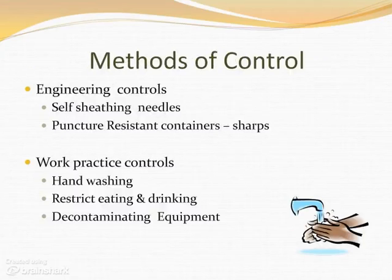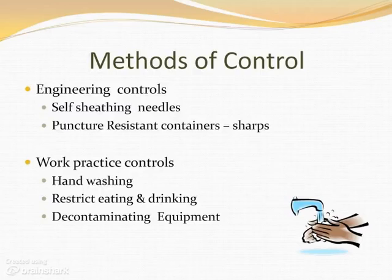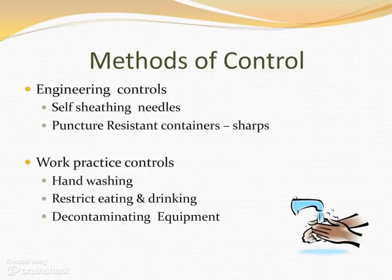There are many methods of control to decrease or eliminate your exposure to infectious materials. Engineering controls that may be used include self-sheathing needles, puncture-resistant containers for disposal of contaminated sharps, and resuscitation bags and ventilation devices. Work practice controls include hand washing, restricting eating and drinking in areas where contaminated materials may be present, and decontamination equipment.